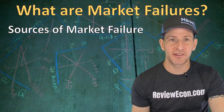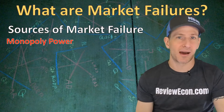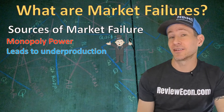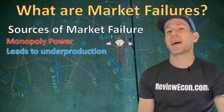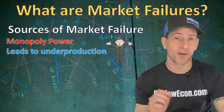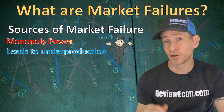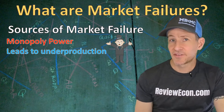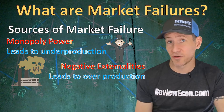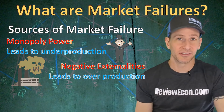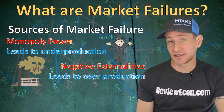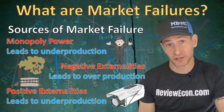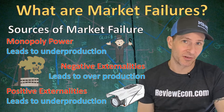We have a few different sources of market failures. One of those is monopoly power. As you already know, monopolies underproduce and overcharge, and they are not allocatively efficient. We also have externalities. Externalities occur when there are costs or benefits that fall on people who don't produce or purchase a product. If there are negative externalities — costs on people who don't purchase or produce the product, like pollution — we are going to overproduce the product in the free market.